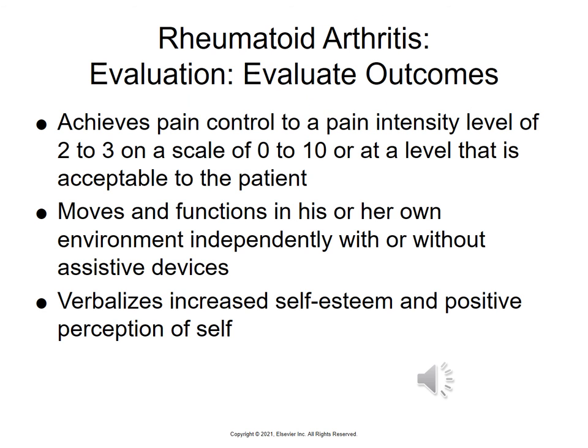For outcome evaluation in RA patients: we want pain controlled at a 2 to 3 or at a level acceptable to the patient. We want them to function as independently as possible with or without assistive devices, and we want them to have a positive perception of themselves — ideally verbalizing an increase in self-esteem.